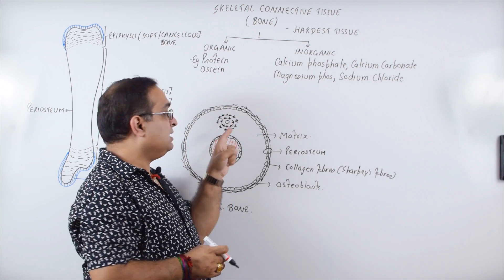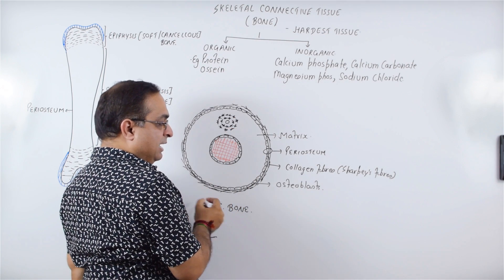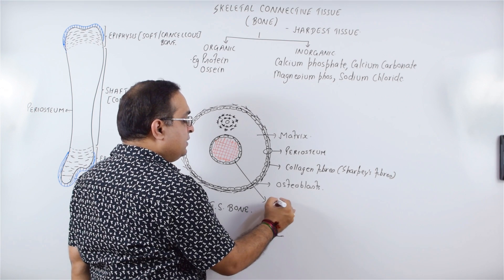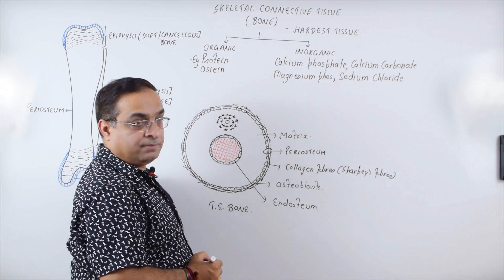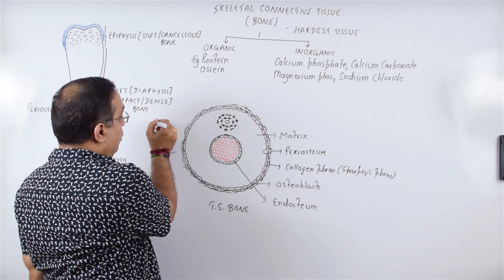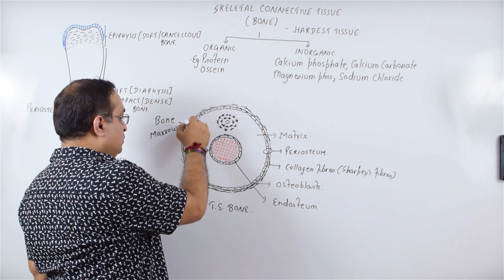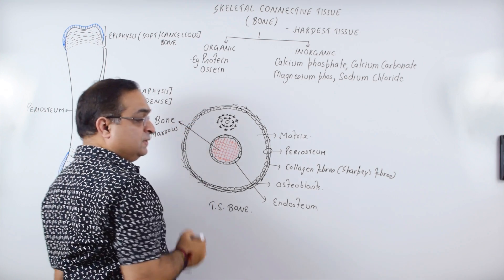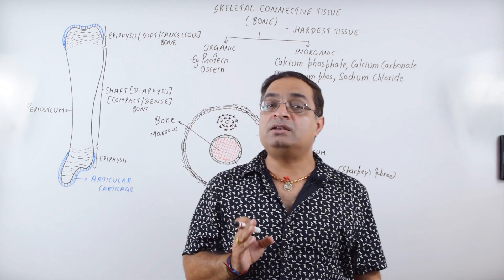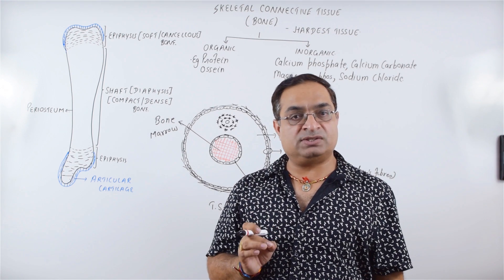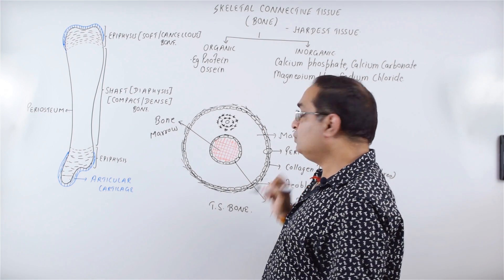One type of lamellae shown here is the Haversian system, also called the osteon. It has Haversian lamellae and a Haversian canal. This is the endosteum — the outermost layer was periosteum. Shown here in red is bone marrow, which is present in the medullary cavity of the bones. Bone marrow is hemopoietic tissue, meaning blood-forming tissue; RBCs, WBCs, and platelets are formed in the bone marrow.